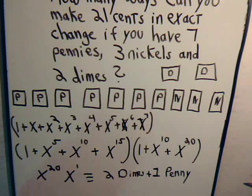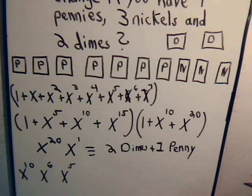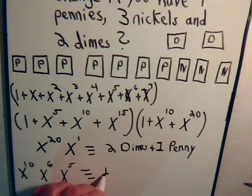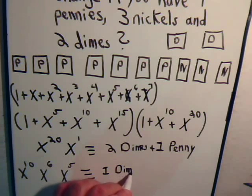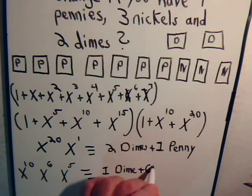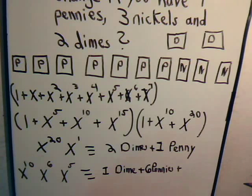So we would have x to the 10, x to the 6th, and x to the 5th. That would add up to 21 to give us x to the 21. And let's see, this would correspond to one dime. We have x to the 6th, and that's one nickel, and that's six pennies, plus one nickel.